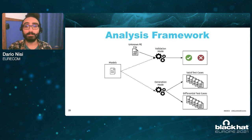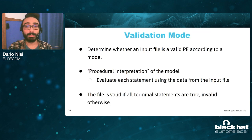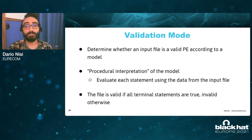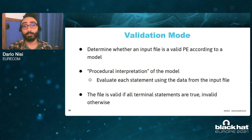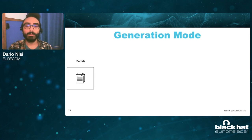Let's now give a look at our analysis framework starting from the validation mode. In validation mode, we want to determine whether an input file is valid according to a model or not, and we can do that by means of the procedural interpretation technique, which consists in evaluating each statement of the model using the data from the input file. The file is then considered valid if all the terminal statements in the model are true, and invalid if even one of those is evaluated to be false.